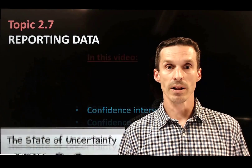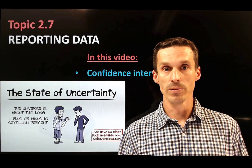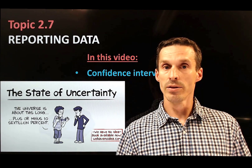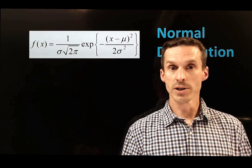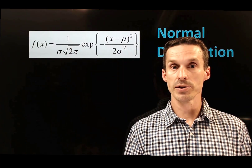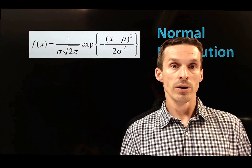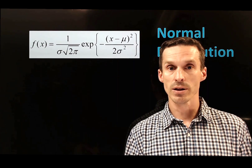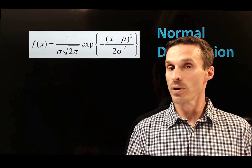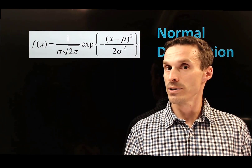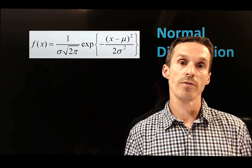In this topic, I'll explain something called a confidence interval, which is a way of helping us to report the certainty in our measurements. Let's start the discussion with this equation right here. Just so you know, you won't actually have to work with this equation for any calculations — I just wanted to show it to you because it already represents something I'm sure you're familiar with.